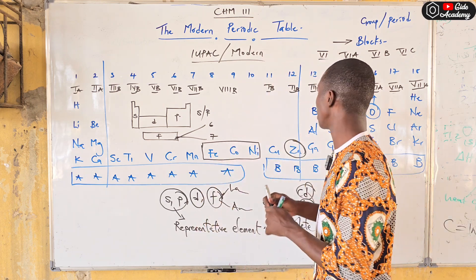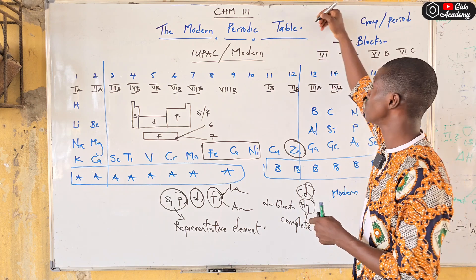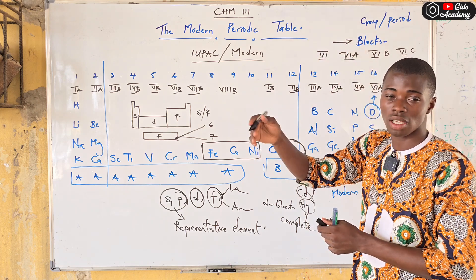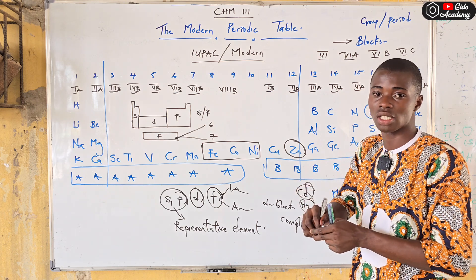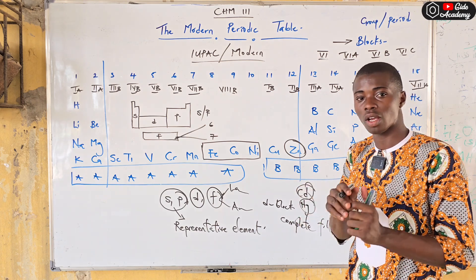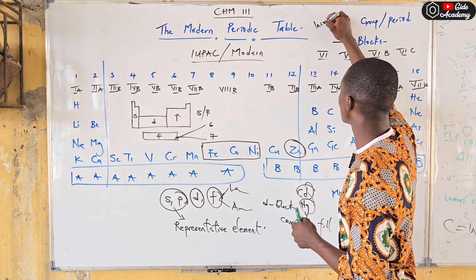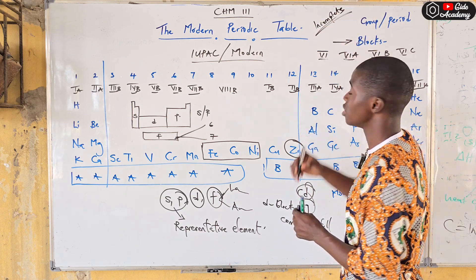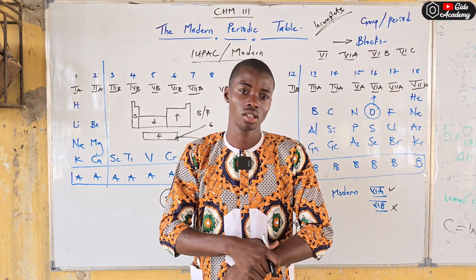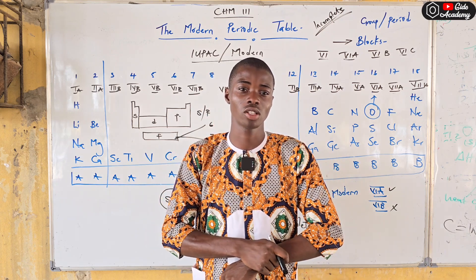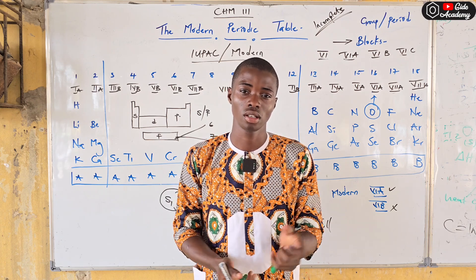To recap: Period 1 has 2 elements, Period 2 has 8, Period 3 has 8, Period 4 has 18, Period 5 has 18, Period 6 has 32, and Period 7 has 32 or 17. The closing question is: which period in the periodic table is incomplete? Please drop your answer in the comments. Don't forget to subscribe, like the video, and drop a comment. God bless.